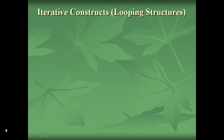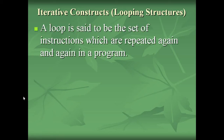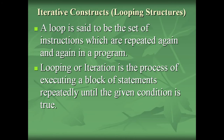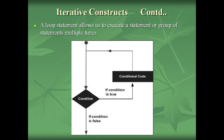In this lecture we are going to learn iterative constructs, that is looping structures in VB.NET. A loop is a set of instructions which are repeated again and again in a program. In a program there can be a set of statements which we need to execute repeatedly. This process of executing a block of statements repeatedly until the given condition is true is called looping or iteration. A loop statement allows us to execute a statement or group of statements multiple times.